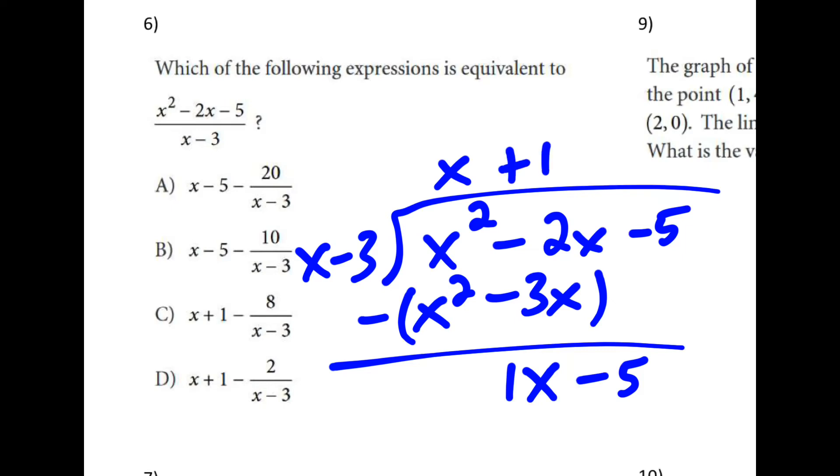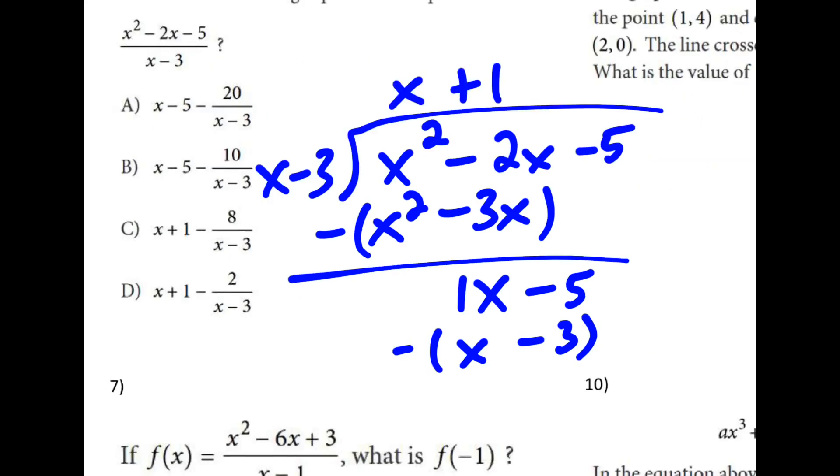And if I subtract this, my x's go away. And I'm left with negative 2. So my remainder is going to be negative 2 all over x minus 3. Which gives me my answer of d.